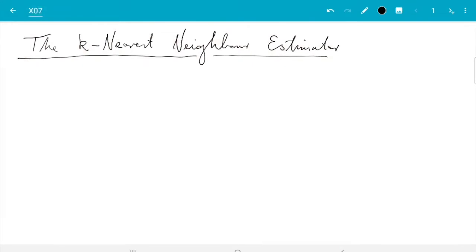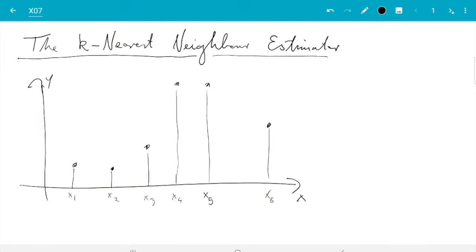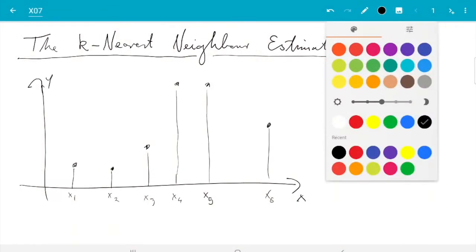The k-nearest neighbor estimator is a method for smoothing and I want to explain that with the help of a simple example. So let's assume we are given these data points. So for each of them we have an x value and then corresponding y values.